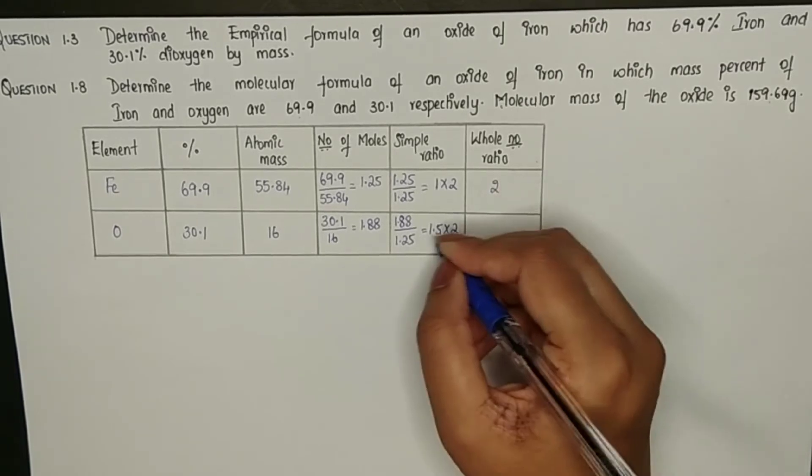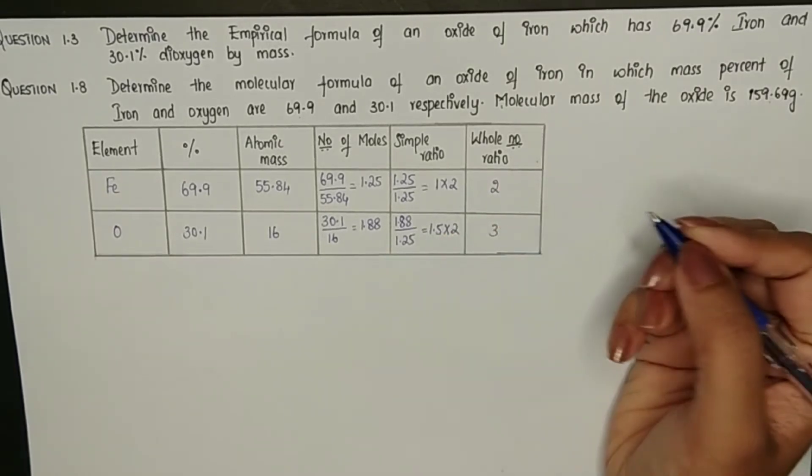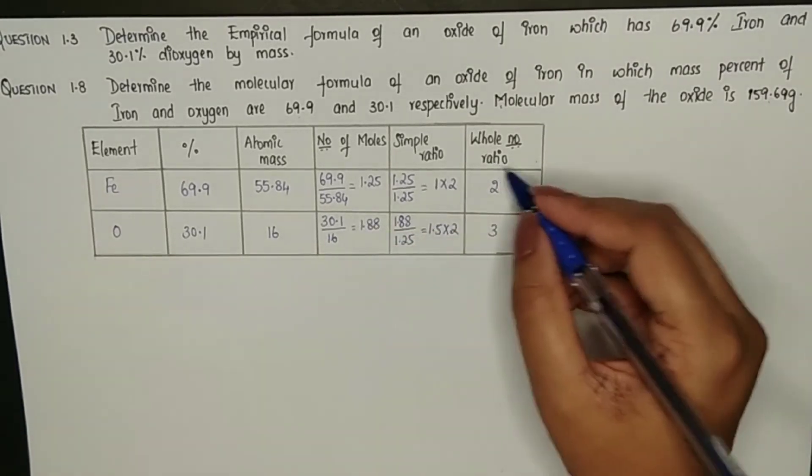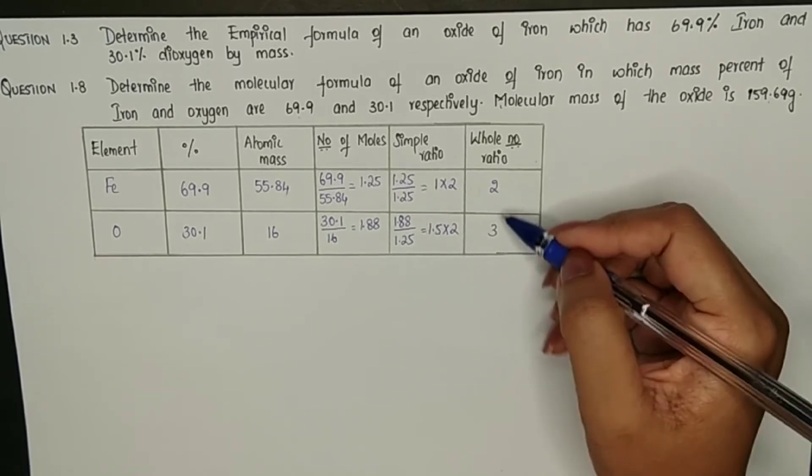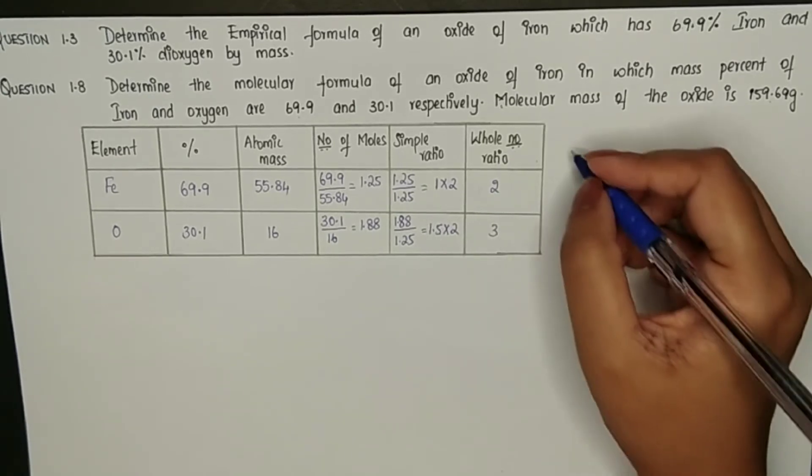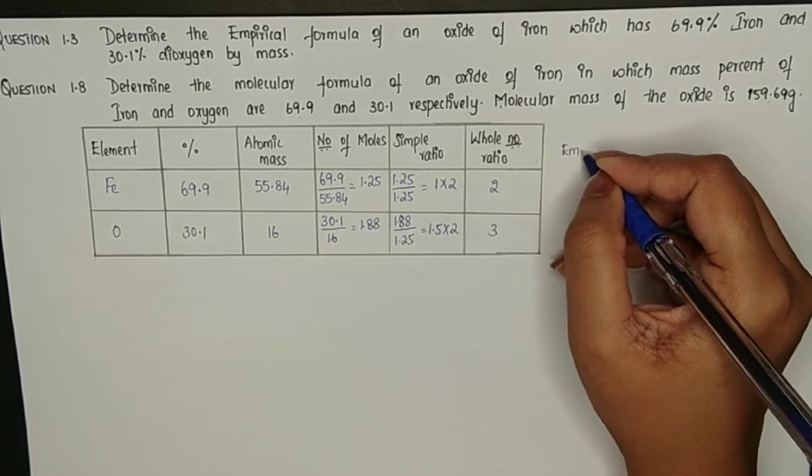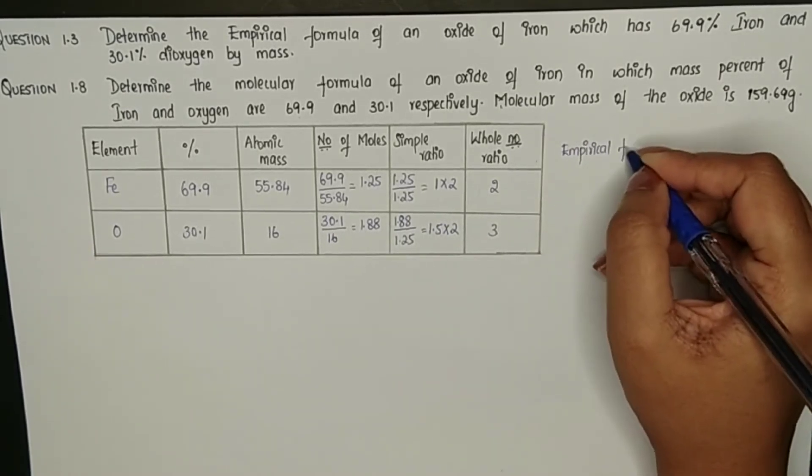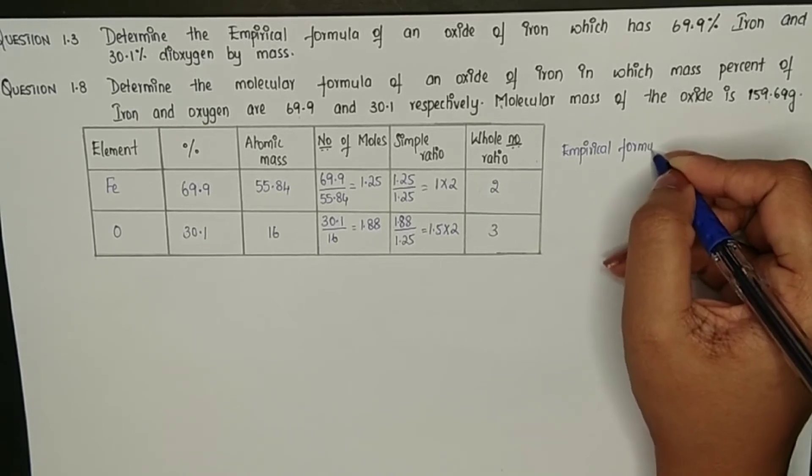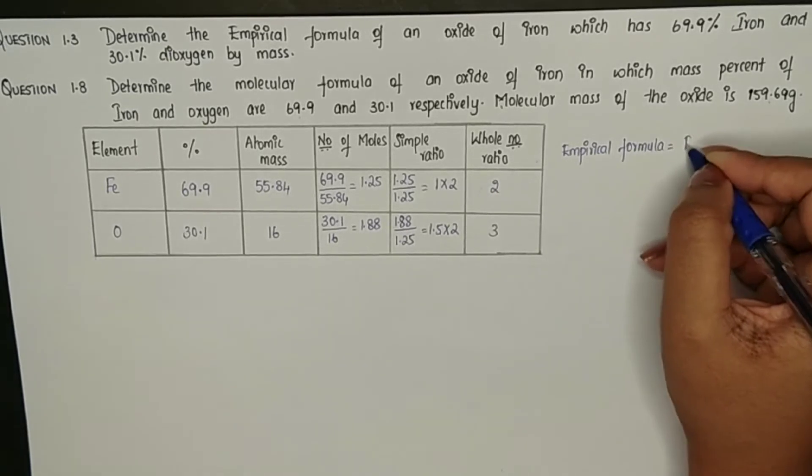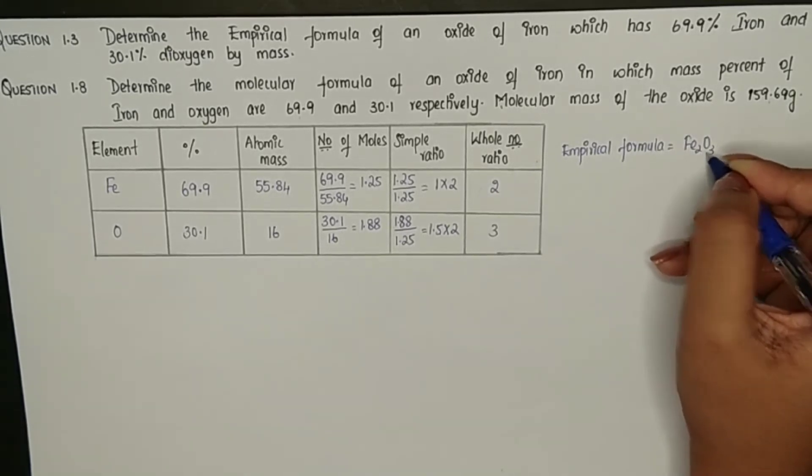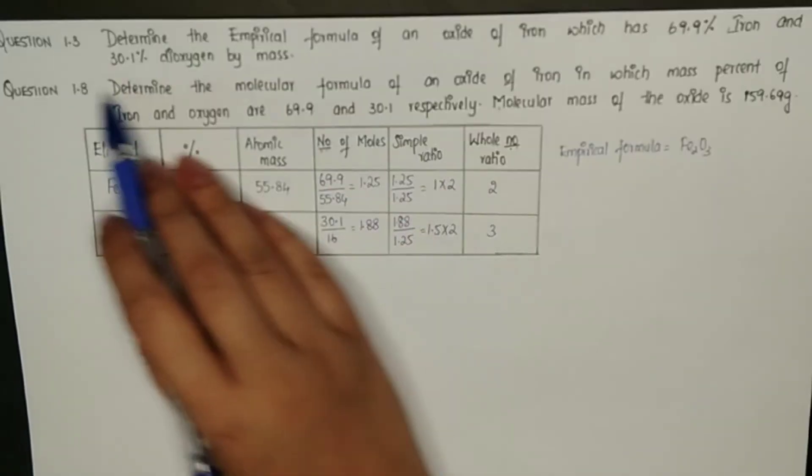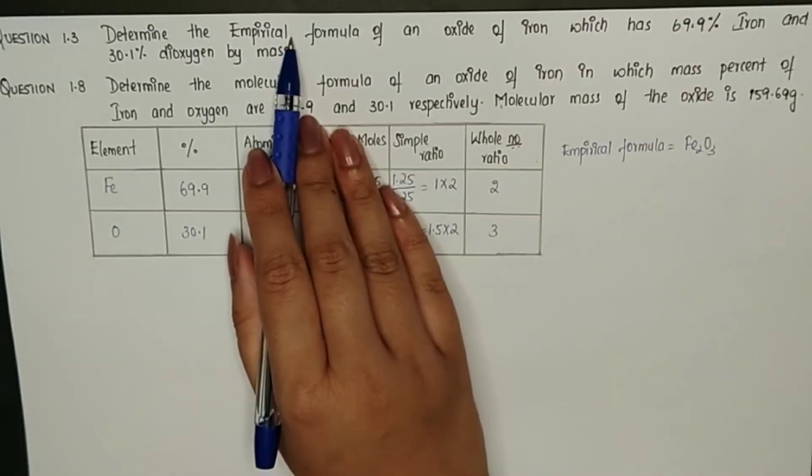In this case since the ratio for iron is 2 and ratio for oxygen is 3, the empirical formula is Fe2O3 and that is our answer for question 1.3. We stop here when a question is asked based on 1.3.